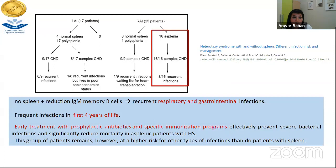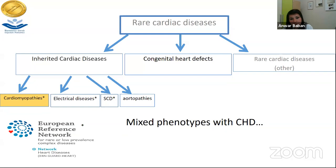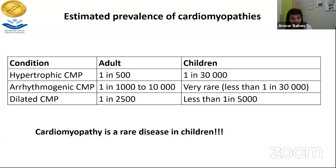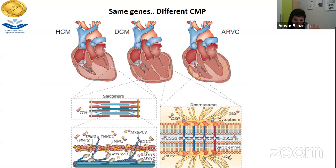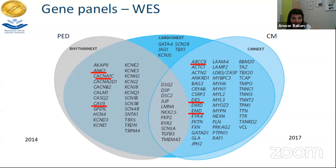We sometimes think that congenital heart defects are detached from the rest of inherited cardiac diseases, but that is not always the case — there are mixed phenotypes with congenital heart defects. For example, cardiomyopathies in children is a rare disease requiring particular attention. Different cardiomyopathies can be caused by different genes, and I'll bring you an example of a patient diagnosed at birth with ventricular septal defect and left ventricular non-compaction, initially without systolic dysfunction, with multiple oral dysplasia and mild dysmorphic features.